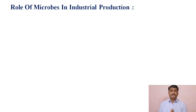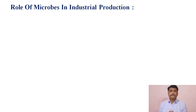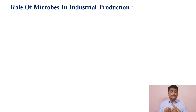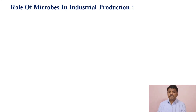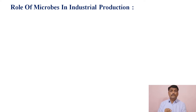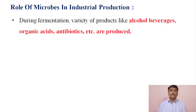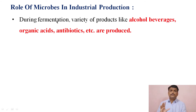In the previous lectures, we have seen the microbes in indigenous and household productions — microorganisms used in different types of household productions like idli, dosa, dhokla, different types of dairy products such as curd, yogurt, buttermilk, cheese, etc. Now from today, we will start the role of microorganisms in industrial production. Industrial productions are completed with the help of certain kinds of microorganisms, and this is also the fermentation process.